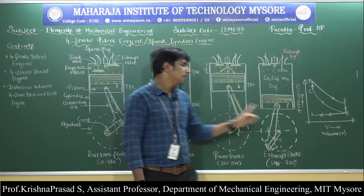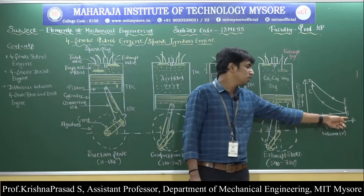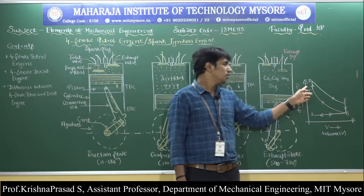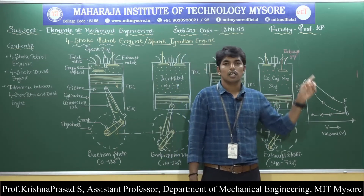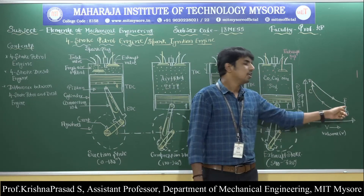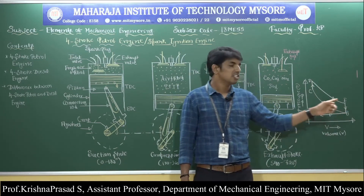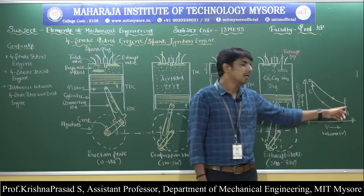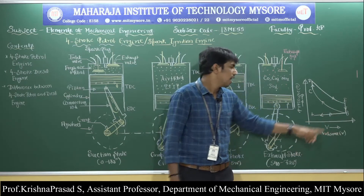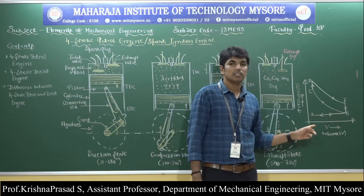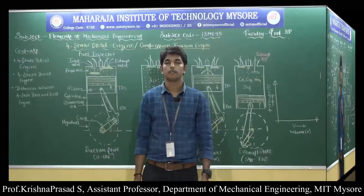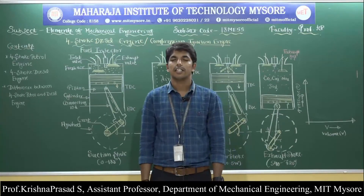On the PV diagram: AB represents the suction stroke, BC the compression stroke, CD the combustion at constant volume, DE the power stroke, EB the sudden drop in pressure, and BA the exhaust stroke.